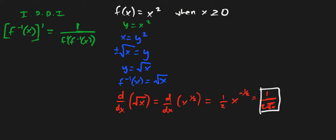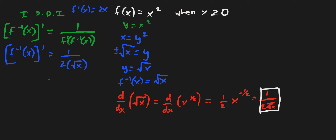Let's use this formula to find the derivative of the inverse. The derivative of the inverse equals one over f prime evaluated at the inverse of f. Since f prime of x equals two x by the power rule, this becomes one over two times root x — the inverse is root x — which gives one over two root x. This is exactly the result we got before.